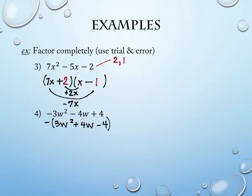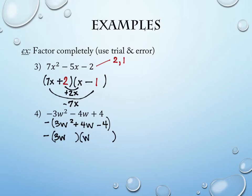When you see a negative at the beginning, the first thing you're going to do is factor the negative out, which will change all your signs. All my signs switched because I pulled the negative out. The constants in front — the 3, the 4, the 4 — don't all have a factor in common besides 1, so there are no common factors to worry with. But I can do my factoring now. It's nice because I only have a 3 and a 1 — no other choices. It's 3W and W.